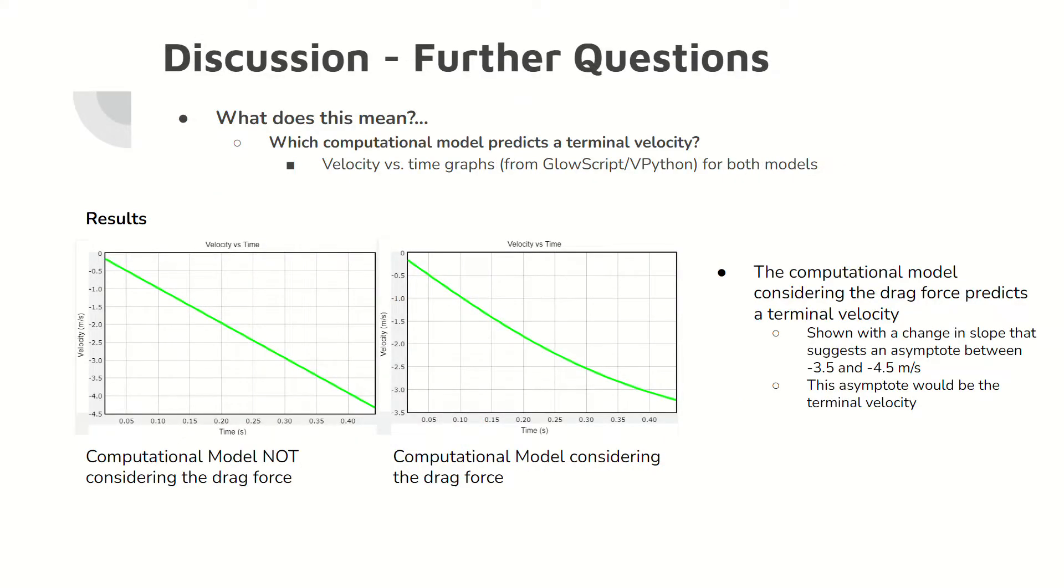Out of the two computational models, the model that considers the drag force predicts a terminal velocity. When comparing the velocity versus time graphs for both models, the drag force model shows a decrease in the magnitude of the change in velocity, suggesting an asymptote at negative 3.5 to negative 4.5 meters per second that suggests a terminal velocity there.